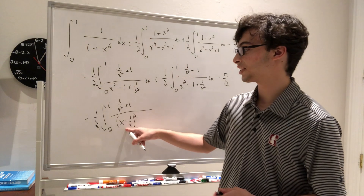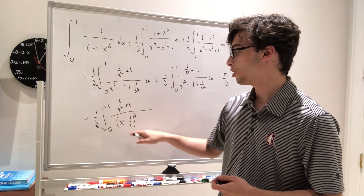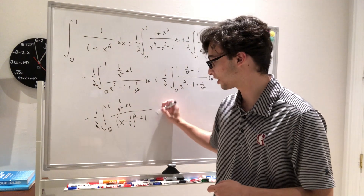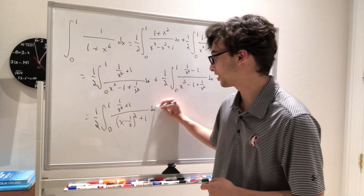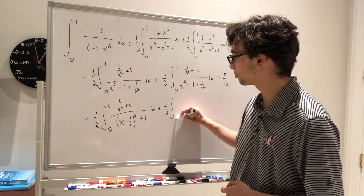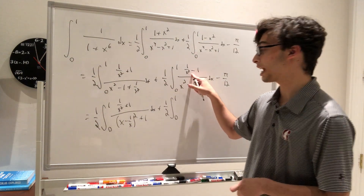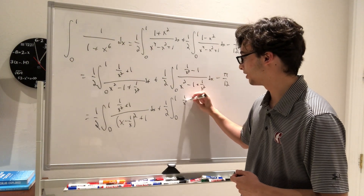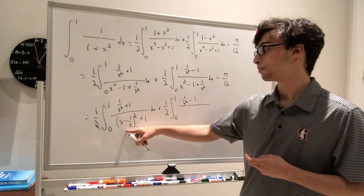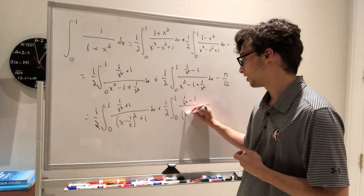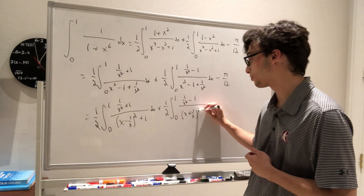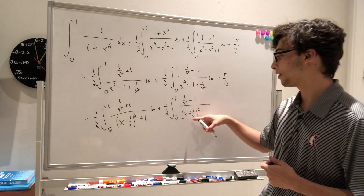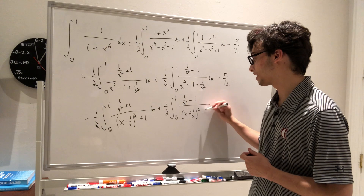We have plus one half times the integral from 0 to 1 of (1 over x squared minus 1 over x squared) over (x squared minus 1 plus 1 over x squared) dx, minus pi over 12. We can rewrite the denominator: this equals one half times the integral from 0 to 1 of (1 plus 1 over x squared) over (x minus 1 over x) squared plus 1 dx. When you square (x minus 1 over x), you get x squared plus 1 over x squared minus 2, so adding 1 gives us the right form. For the second integral, we want (x plus 1 over x) quantity squared, and when you square that you get x squared plus 1 over x squared plus 2, so we need to do minus 3.